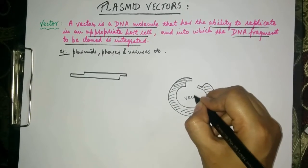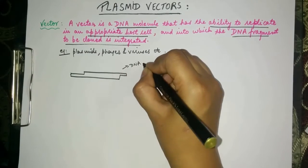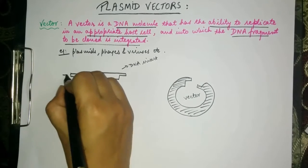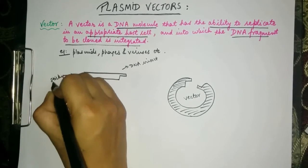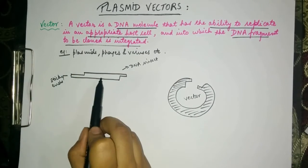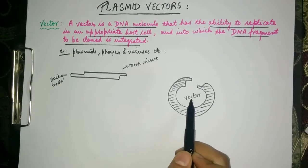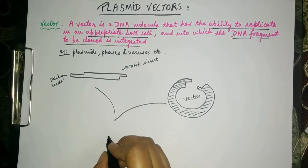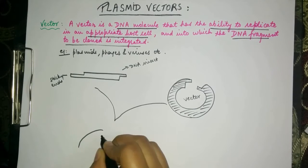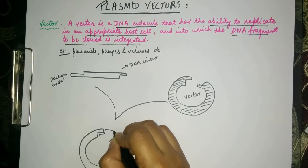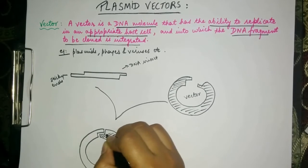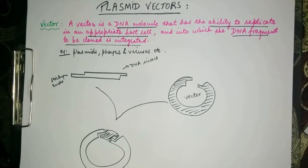This is the vector and this is the DNA insert. Now these ends are the sticky ends. These sticky ends will help this DNA insert to get integrated into the vector. So when these both combine with each other we get something like this. Here the DNA insert has been integrated into the vector.